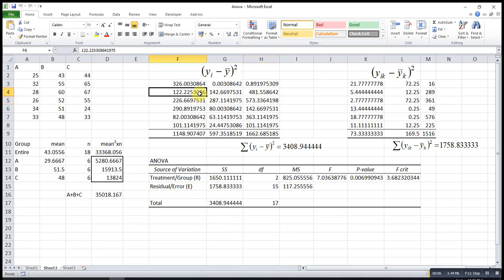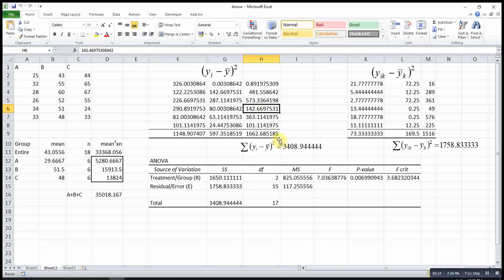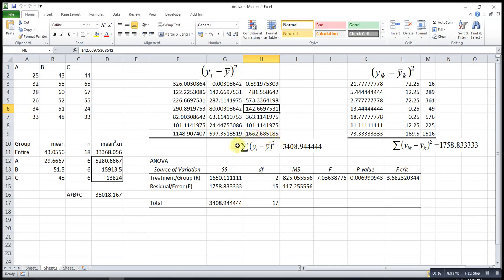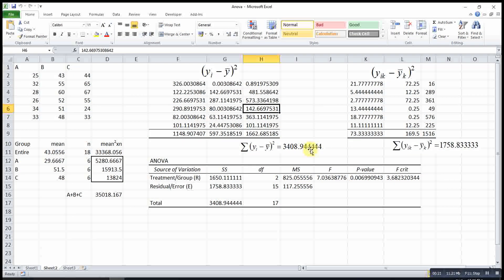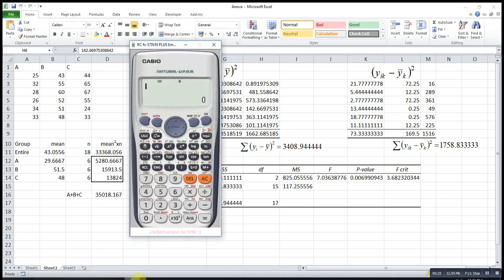To get all these values is actually really time-consuming. If we observe this term carefully, it's actually similar to our variance formula. The variance formula is this term over N. So if we want to obtain this value, we can take the variance times N. This means we can make use of the calculator function.